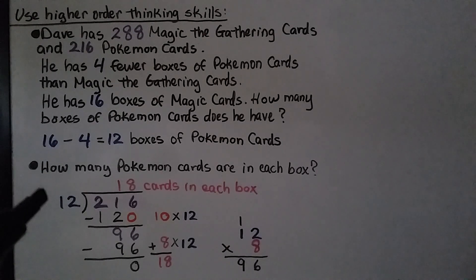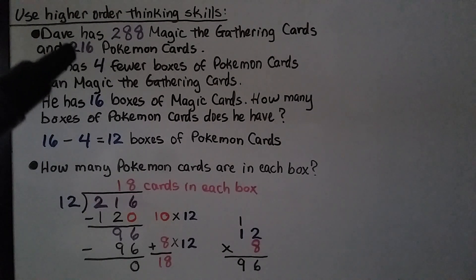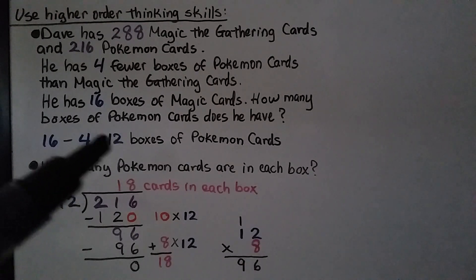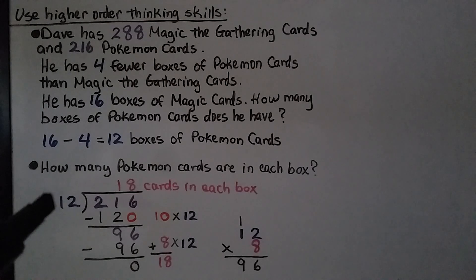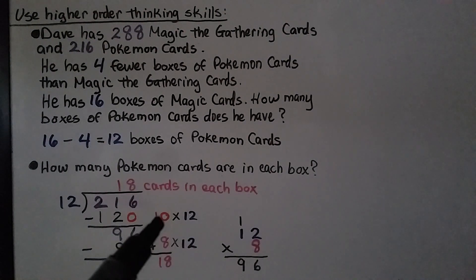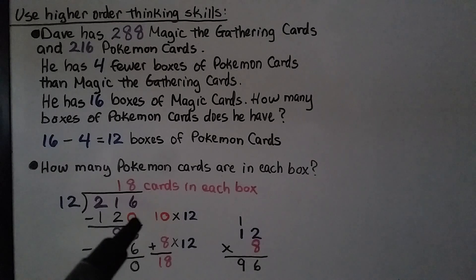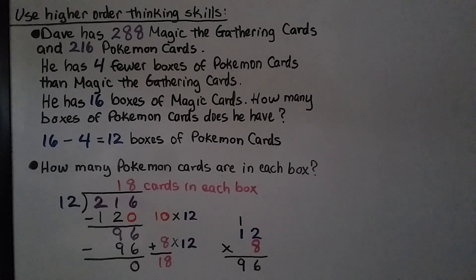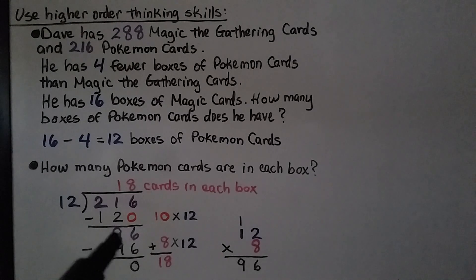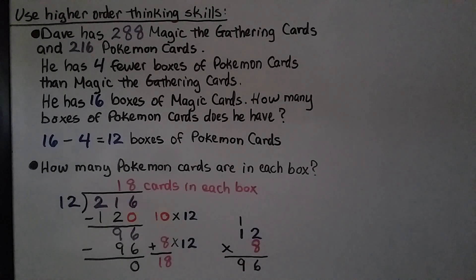Now, how many Pokemon cards are in each box? We know he has 216 Pokemon cards in 12 boxes, so we find 216 divided by 12. We know 12 times 1 is 12, and if we change that 1 into a 10 by adding a zero, we get 10 times 12 equals 120. We subtract and get a difference of 96. Then 8 times 12 is 96 — we subtract it and get 0. So 10 plus 8 means there are 18 cards in each box.